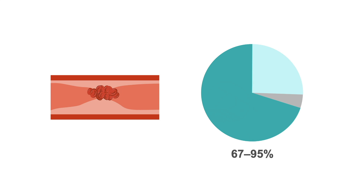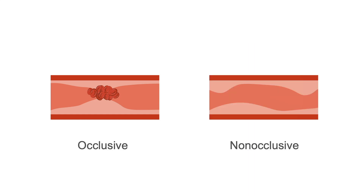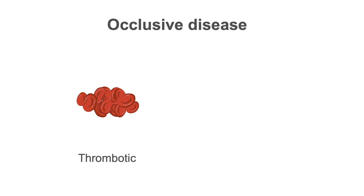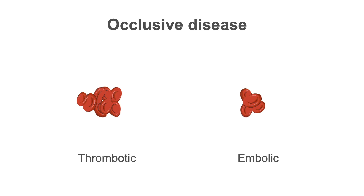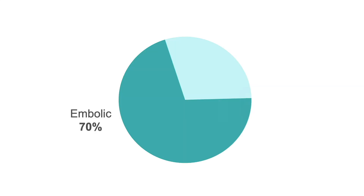Acute mesenteric arterial occlusion accounts for 67-95% of cases of acute mesenteric ischemia. Mesenteric ischemia can be divided into occlusive disease and non-occlusive disease. In occlusive disease, the major causes are classified as thrombotic or embolic disease and can be of an arterial or venous origin. About 70% of superior mesenteric artery occlusion is caused by embolism and about 30% by thrombosis.